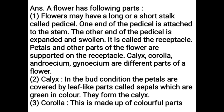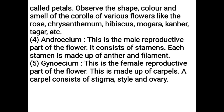Calyx, Corolla, Androecium, and Gynoecium are the different parts of a flower. Calyx: In the bud condition, the petals are covered by leaf-like parts called sepals, which are green in color. They form the calyx. Corolla: This is made up of colorful parts called petals. Observe the shape, color, and smell of the corolla of various flowers like rose, chrysanthemum, hibiscus, mogra, kaner, tagar, etc.